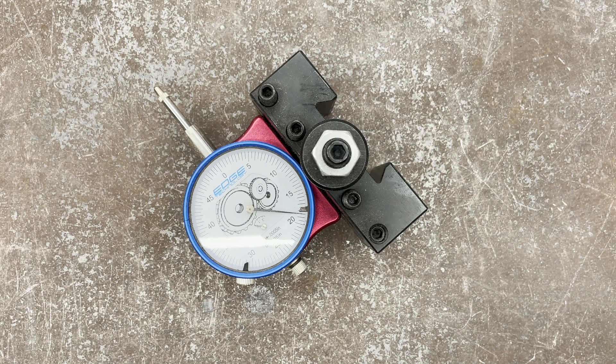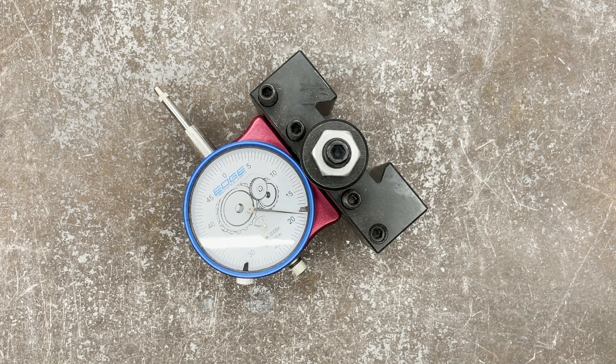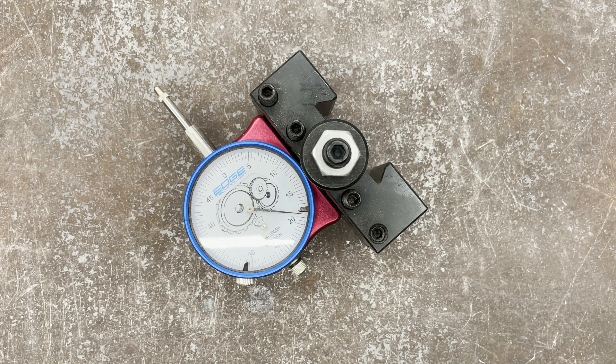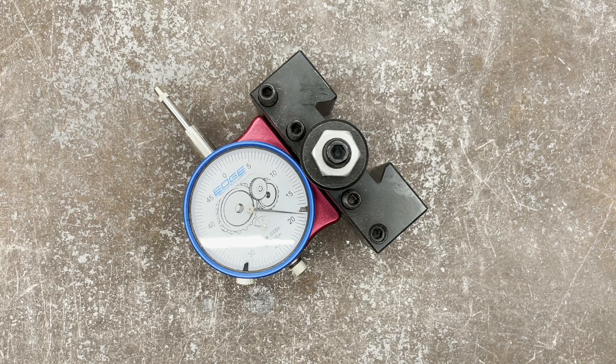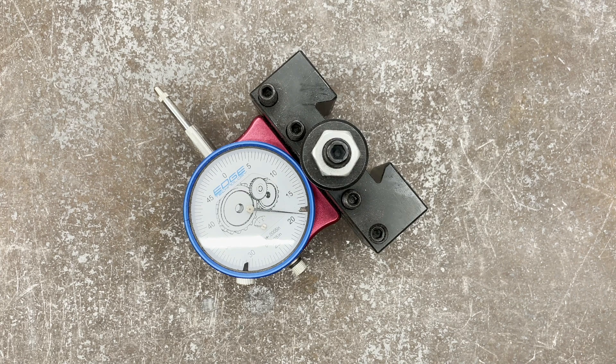This is something we're going to use when we're setting up lathe tools, figuring out are we in the right spot. Is the three-jaw, the four-jaw chuck running true? Do we need to adjust things? Do we need to adjust our workpiece or shim it out?